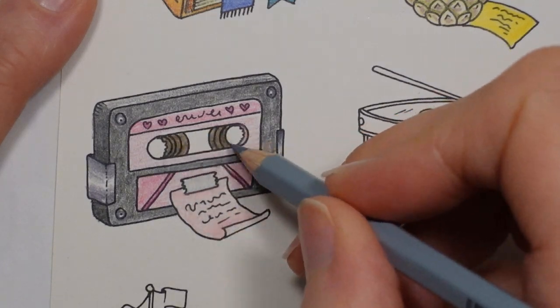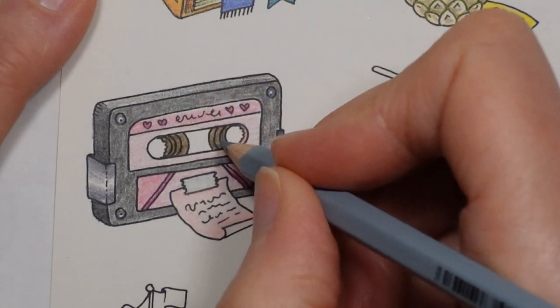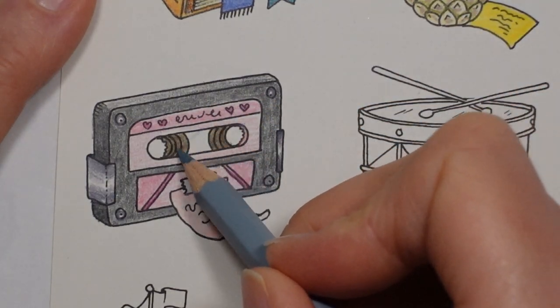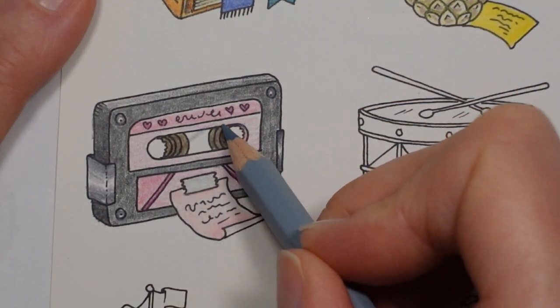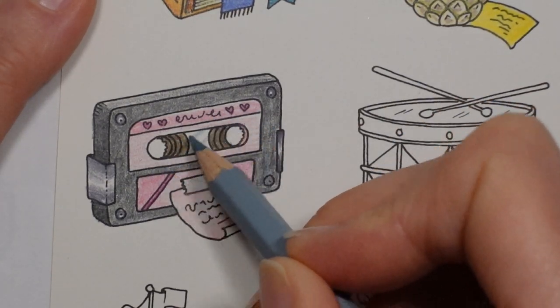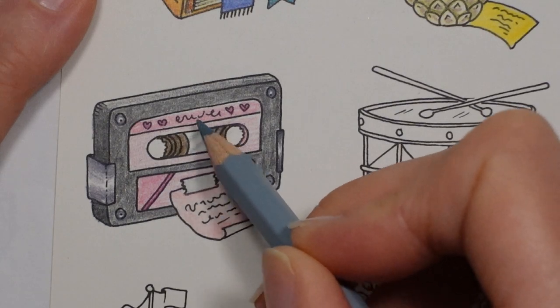Now this part here is usually covered it's not open there's a bit of plastic over it so that you can't damage the tape bit so I'm thinking we might just go over this like that just to make it look like you can see there's something there that's shiny.